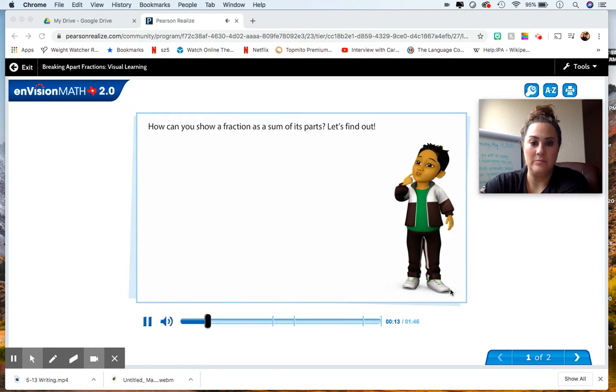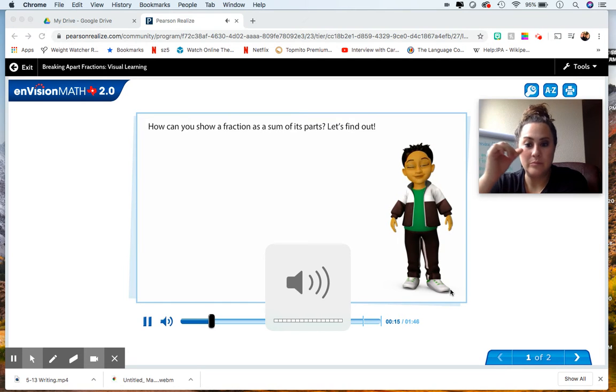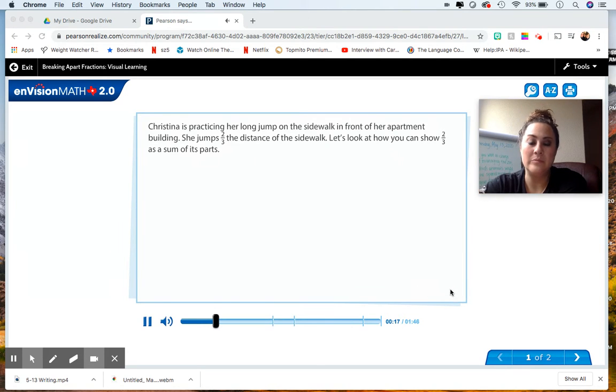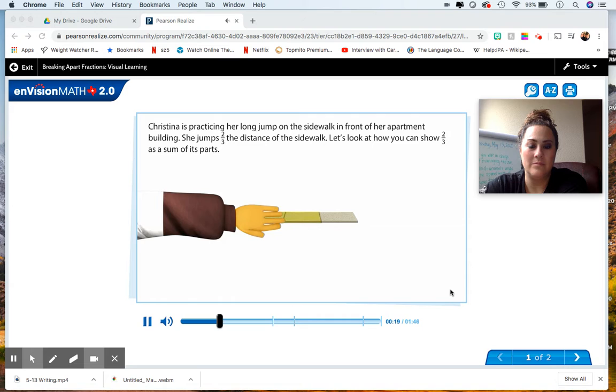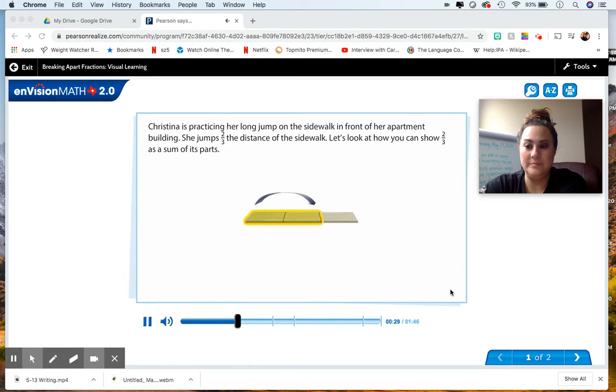How can you show a fraction as a sum of its parts? Let's find out. Christina is practicing her long jump on the sidewalk in front of her apartment building. She jumps two-thirds the distance of the sidewalk. Let's look at how you can show two-thirds as a sum of its parts.